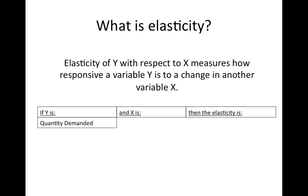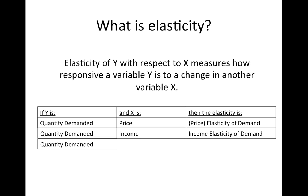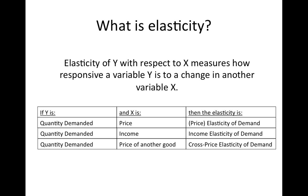First, if Y is quantity demanded of a good and X is the price of that same good, we have the price elasticity of demand. Second, if Y is the quantity demanded of a good and X is income, we have the income elasticity of demand. Third, if Y is quantity demanded of a good and X is the price of a different good, such as a substitute or a complement, we have the cross-price elasticity of demand. The next few slides provide the formulas for each elasticity as well as examples of how to calculate them.